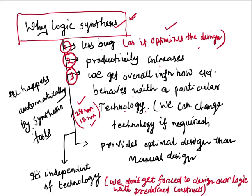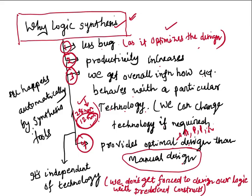Another advantage is flexibility: we can change the technology if required. For example, if we built our circuit with 28nm technology but later decide 12nm is better, we can make that change. The fourth advantage is that synthesis provides a more optimal design than manual design — in terms of area, power, performance, and timing.